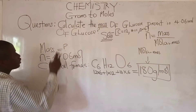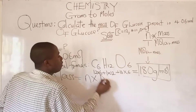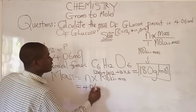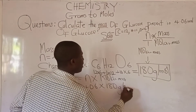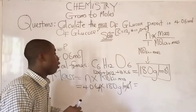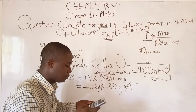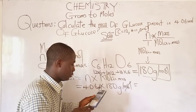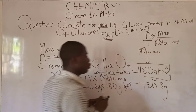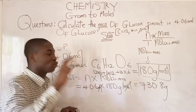Since the question asks for mass, we make mass the subject of the formula: mass = n times molar mass. The number of moles is 4.06 times the molar mass of 180 grams per mole. Moles cancels moles, so the mass of glucose present in 4.06 moles is 730.8 grams.